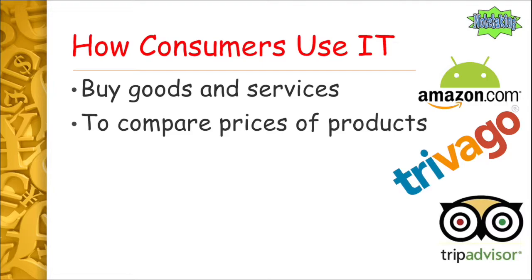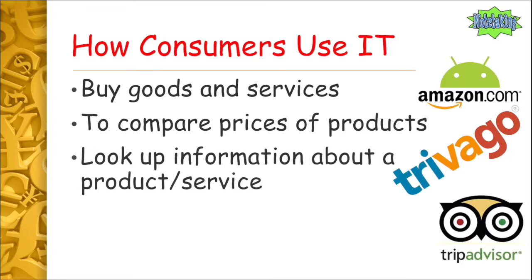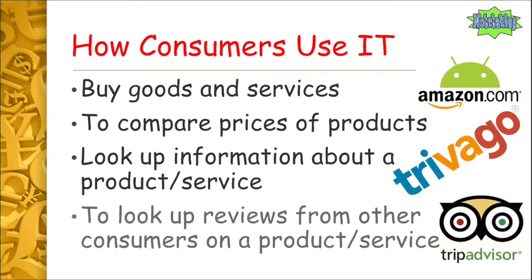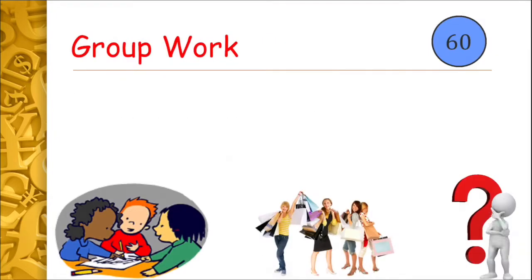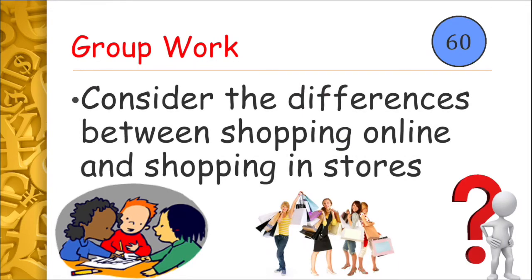Many shops now have their own website where you can buy goods. Consumers also use IT to compare the price of products — going online to find a product in one shop and then searching for it elsewhere to see if it's available at a cheaper price. They also look up information about a product or service, and look up reviews from other consumers on platforms like TripAdvisor or Trivago, which compare hotels, restaurants, and tourist attractions.